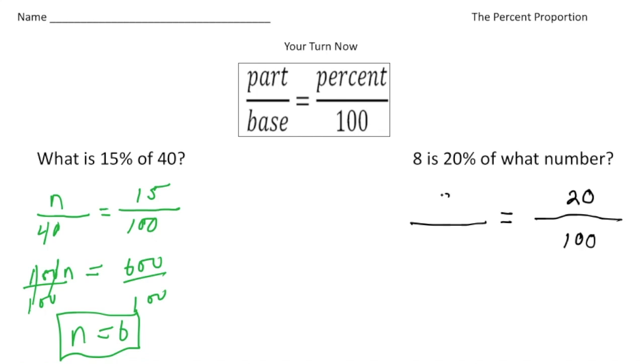But this time, the 8, that's the part, right? Because 8 is 20% of something that's bigger. So the 8 is going to go where the part is, and this is going to be the unknown. So now to solve for n, I'm going to write our equation: 20 times n is 20n.